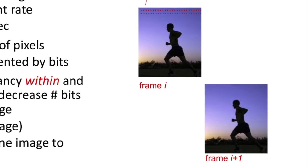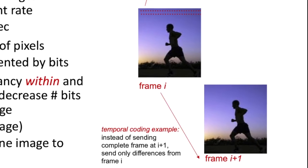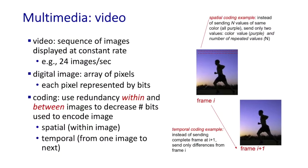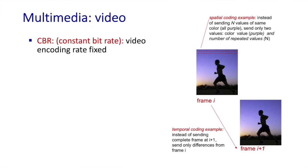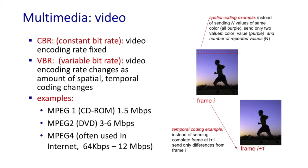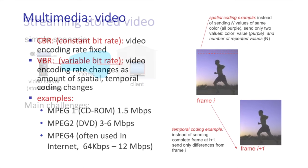We can also code between frames. If the image doesn't change much between frames, we can just send the changes between frames rather than the entire new frame. There are two broad classes of encoding: constant bitrate video, where the recording rate is fixed, and variable bitrate video, where the encoding rate changes over time as spatial and temporal correlation changes. Encoding standards range from MPEG-1 at 1.5 Mbps to MPEG-4, which can run up to 10 Mbps and higher.